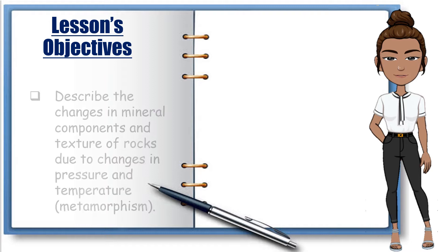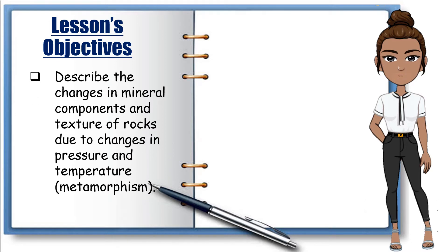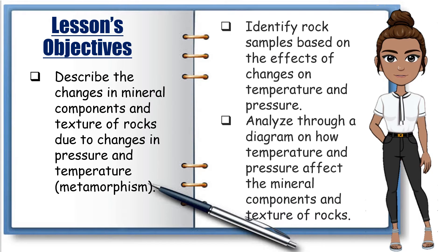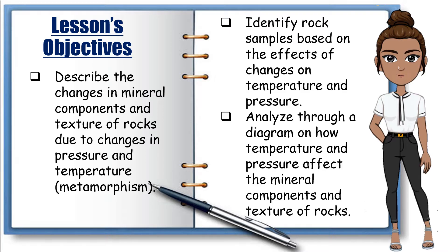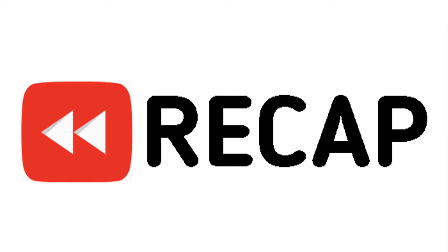In this module, the primary goal is to enable you, dear learners, to describe the changes in mineral components and texture of rocks due to changes in pressure and temperature, or metamorphism. Specifically, this module will help you to identify rock samples based on the effects of changes on temperature and pressure, and analyze through a diagram how temperature and pressure affect the mineral components and texture of rocks. This module demonstrates an understanding of how rocks are formed and transformed based on their content and textures.